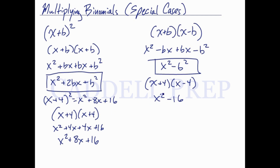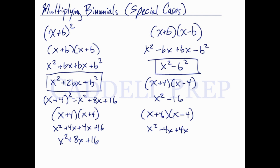And again, if we multiply this out, we should get the same thing. So x times x is x squared, x times negative 4 is negative 4x, 4 times x is positive 4x, and positive 4 times negative 4 is negative 16. These cancel out, and we have x squared minus 16.